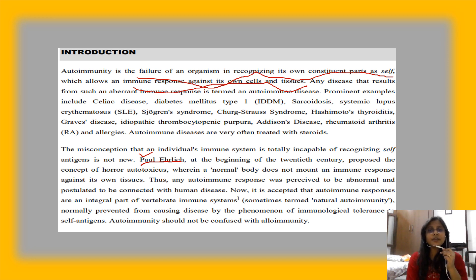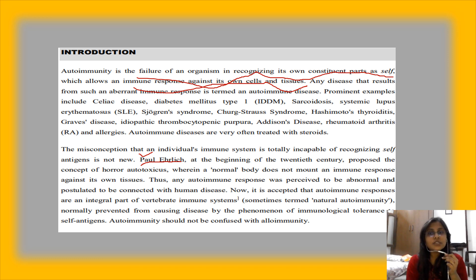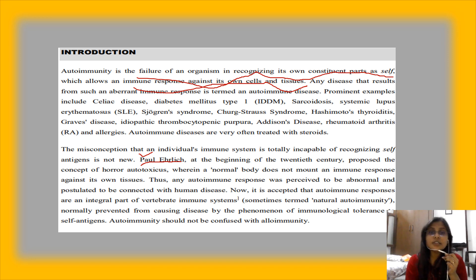In vertebrates — not just humans, but all vertebrates — this autoimmune response is somewhat natural. But normally, when the phenomenon becomes very high, meaning self-tolerance is totally decreased, autoimmunity increases. So autoimmunity is inversely proportional to self-tolerance.